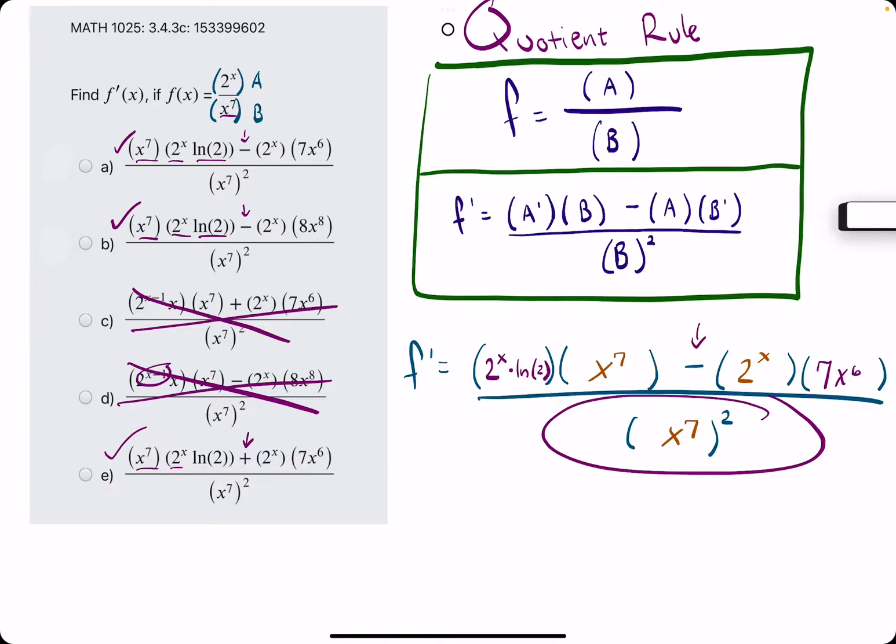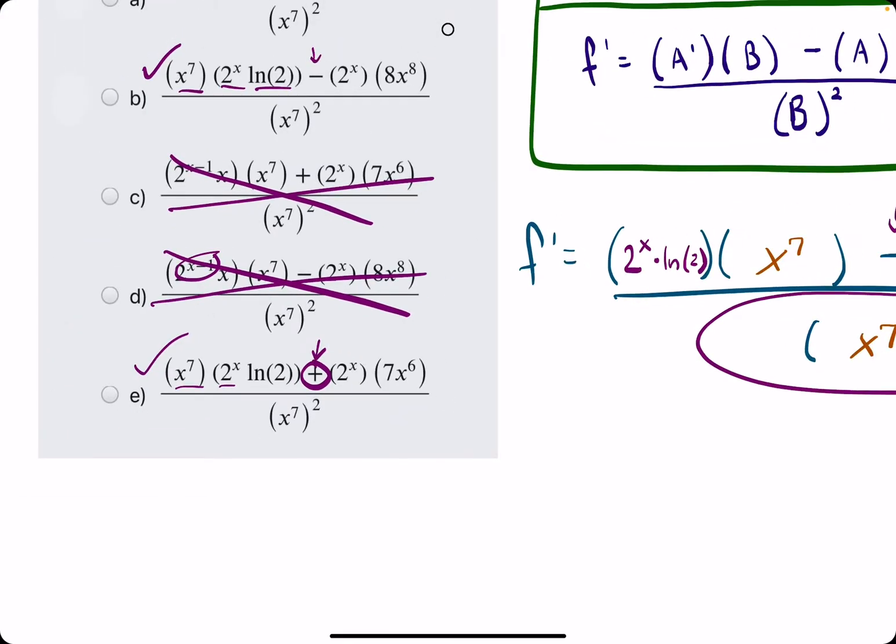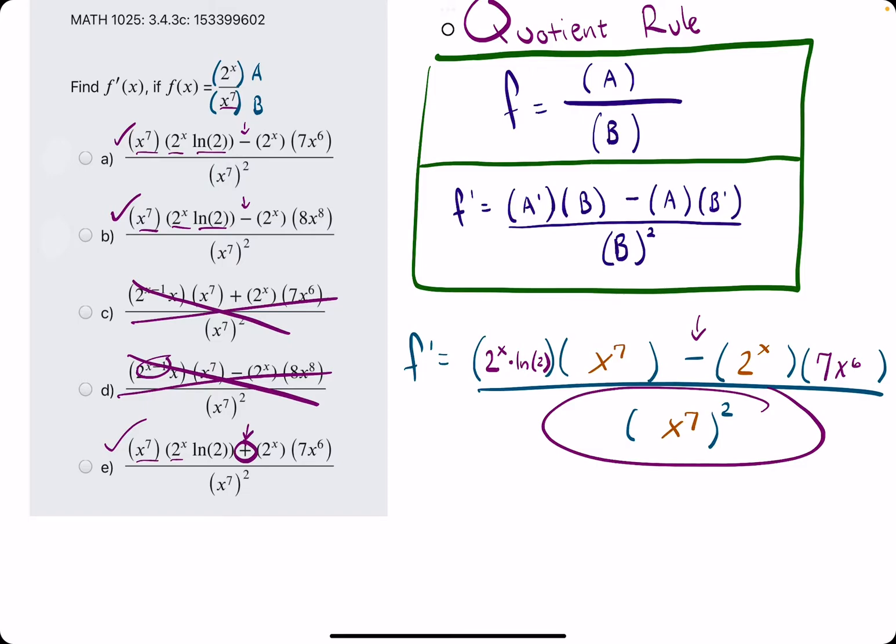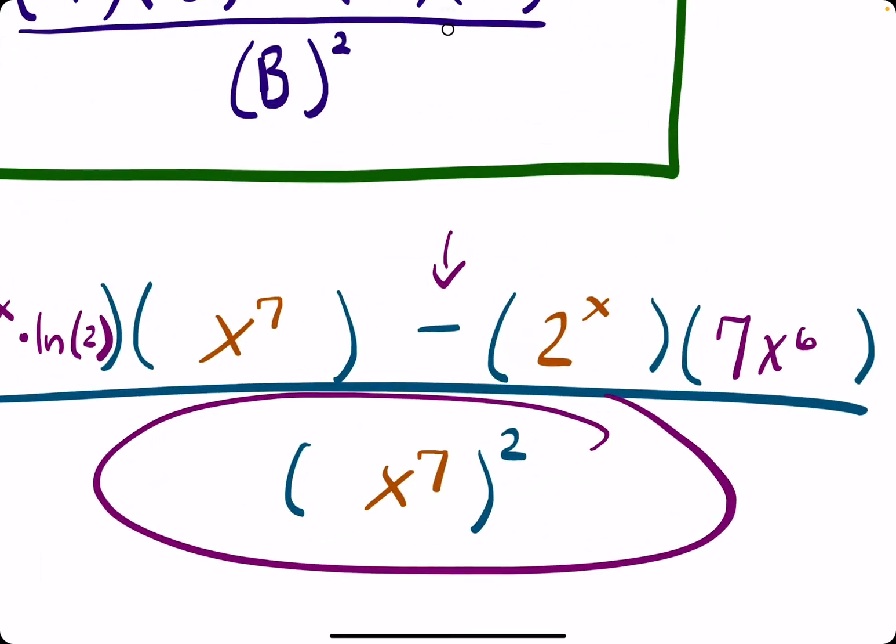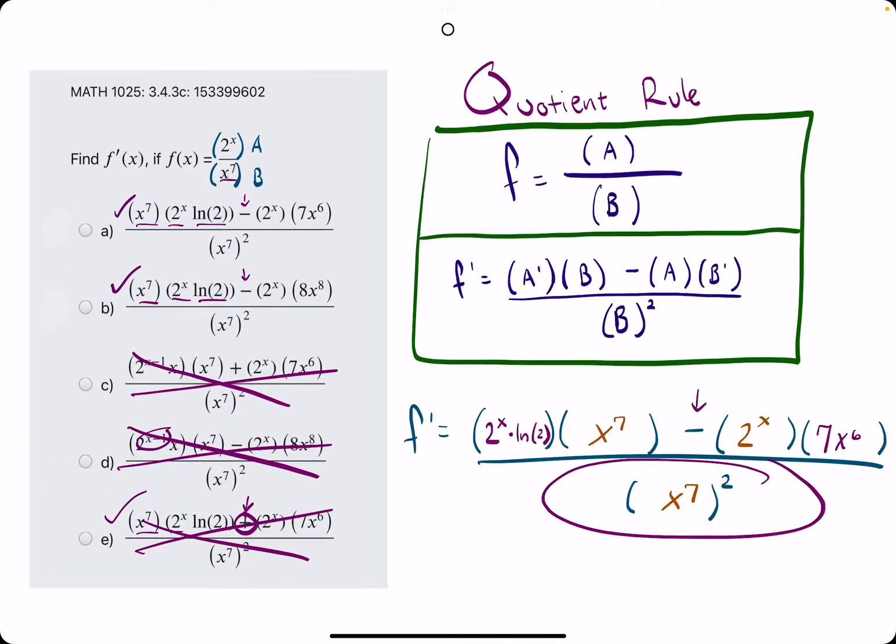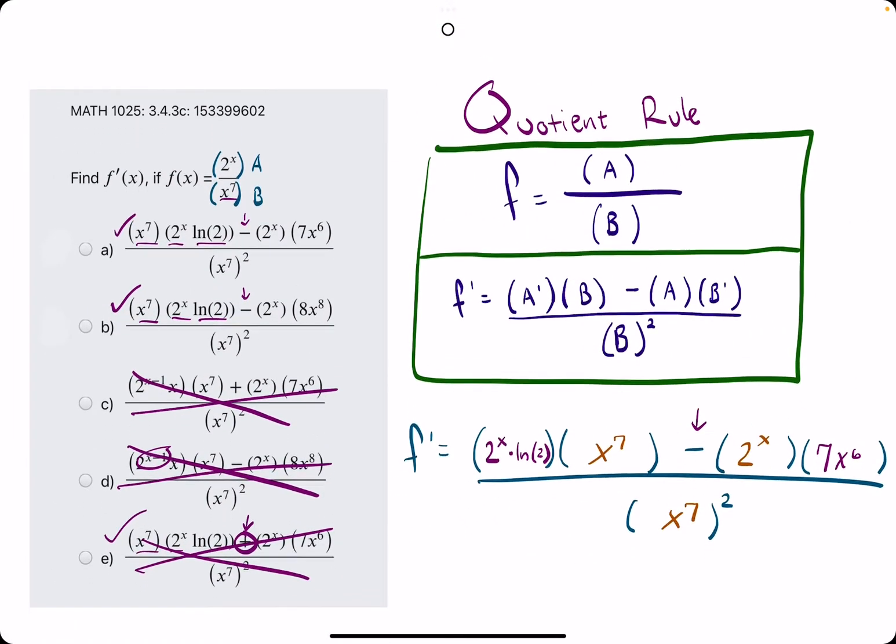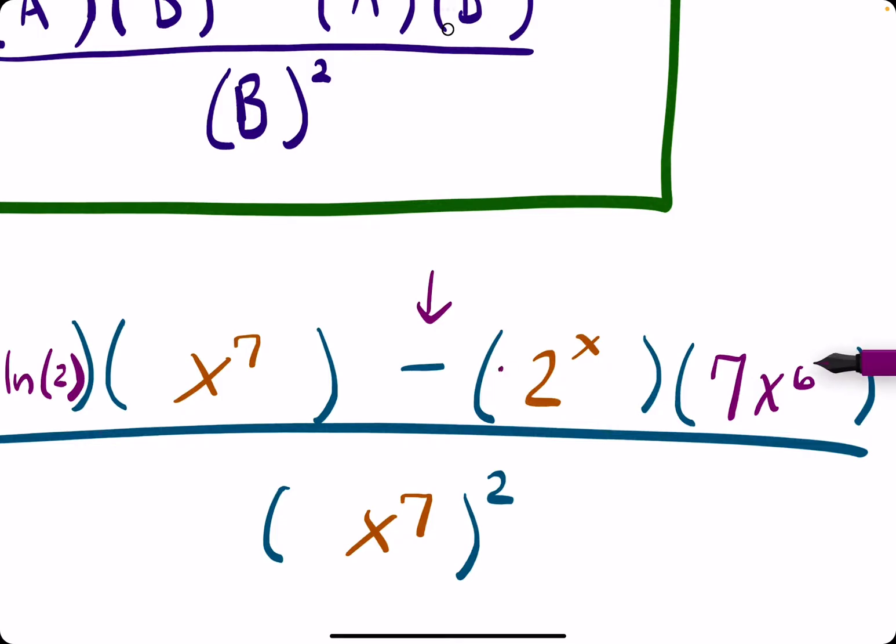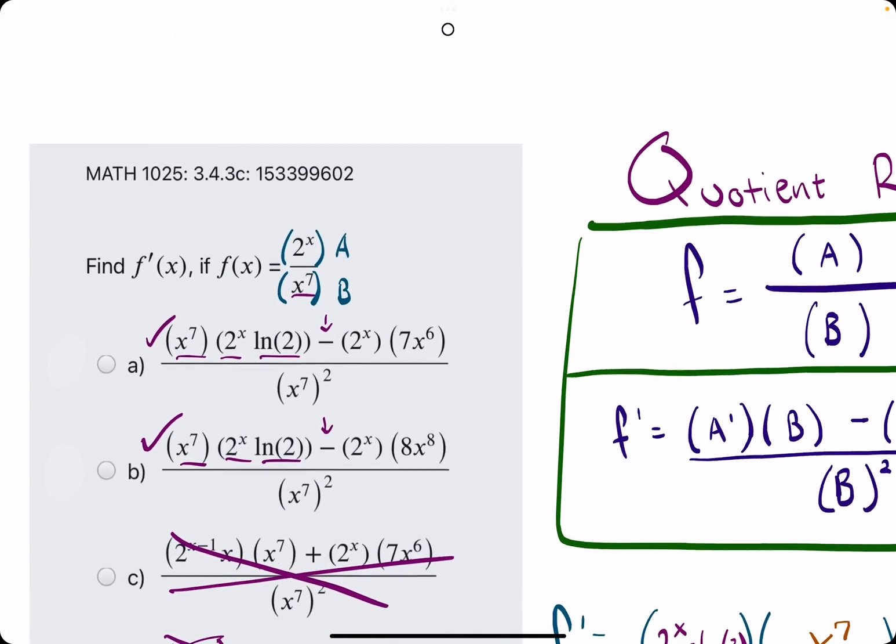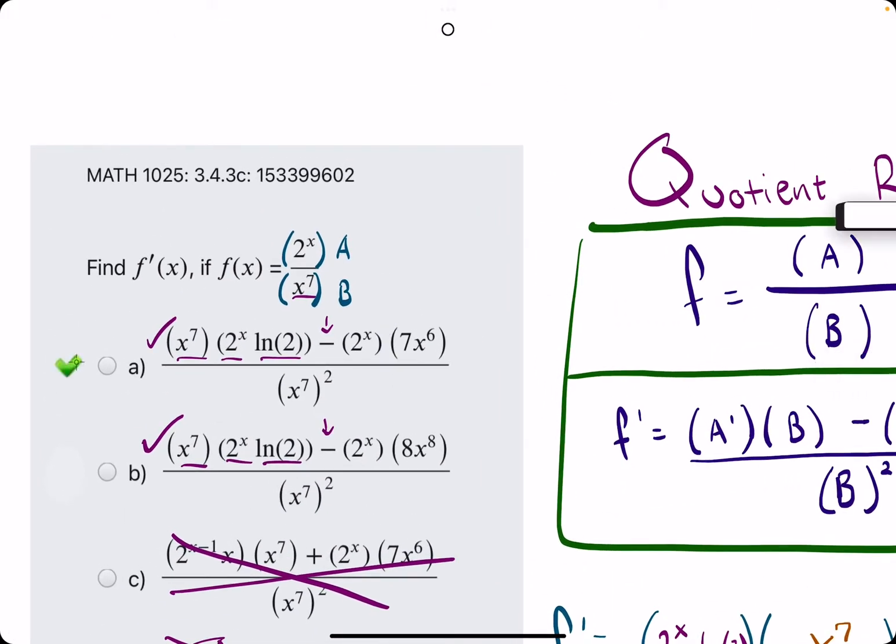The only situation where they might actually have the addition sign as a correct answer would be if one of our derivatives had a negative on it, or one of our terms was negative. But in this case, there's no need to negate a negative. Looking at our options, we see 7x to the 6th right away. So that tells us A is our answer.